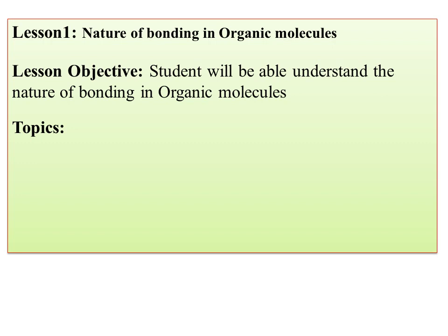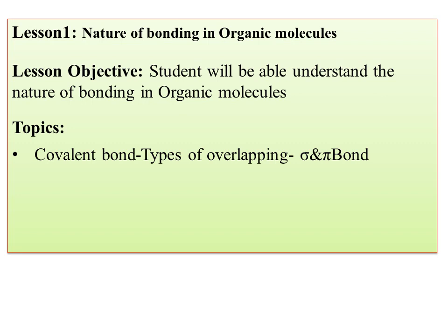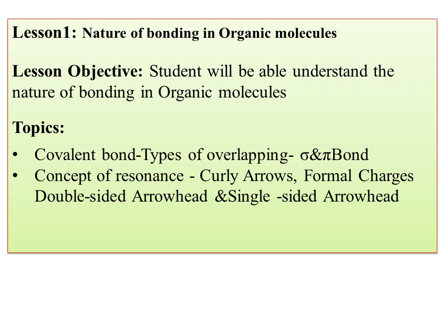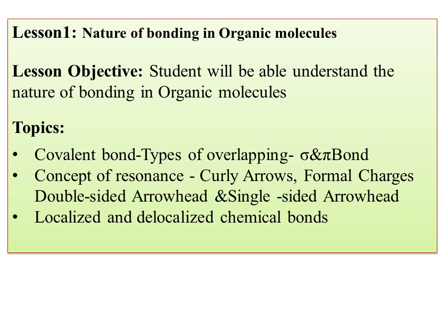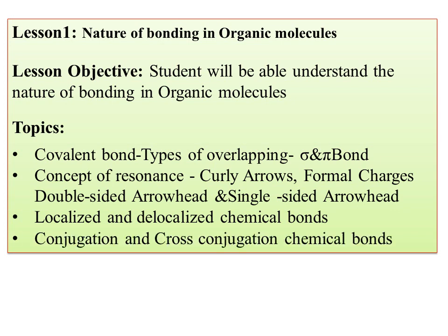Lesson number one is the nature of bonding in organic molecules. The lesson objective is that the student will be able to understand the nature of chemical bonding in organic molecules — whether they are covalent bonds, how the covalent bond is formed, how sigma bonds and pi bonds are formed, and how overlapping takes place. Topics include covalent bonds, types of overlapping, sigma and pi bonds, the concept of resonance, and the use of arrows: formal arrows, curly arrows, double-sided arrows, and single-sided arrows. We also discuss localized and delocalized chemical bonds in aromatic compounds, as well as conjugation, non-conjugation, and cross-conjugation.